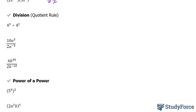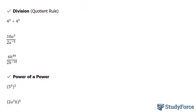Let's move on to division, called the Quotient Rule. The Quotient Rule says that if the bases are the same, you keep the base and simply subtract the exponents. Here we have 3 minus 2, which gives us 1. So 4 to the power of 1 is simply equal to 4. By convention, we assume any variable or number has an exponent of 1 if it's not written.